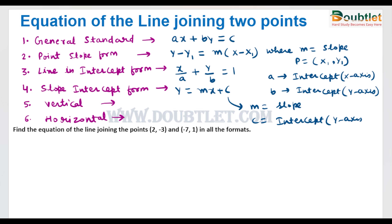A vertical line is one that is perpendicular to the x-axis, meaning its x-coordinate will be constant. For a horizontal line, the y-coordinate is constant. These six types of lines have now been covered.